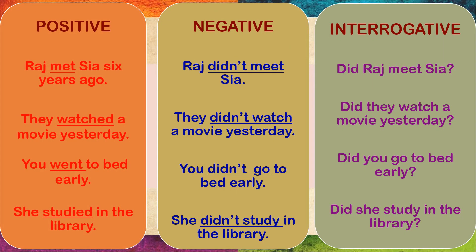Here are certain examples that prove the positive, negative, and interrogative sentences. 'Raj met Sia six years ago' — 'met' is in simple past. To make it negative, we use 'did not.' And to make it interrogative, we use the word 'did' before the pronoun Raj.